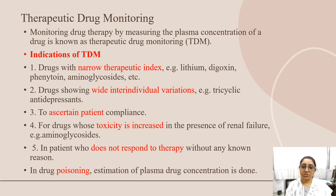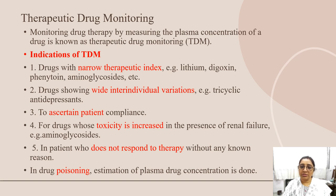In patients who do not respond to therapy without any apparent reason, we can check the plasma concentration to see if it is within the therapeutic range — this is done through therapeutic drug monitoring. TDM is also used in cases of drug poisoning, where estimation of plasma drug concentration is performed.